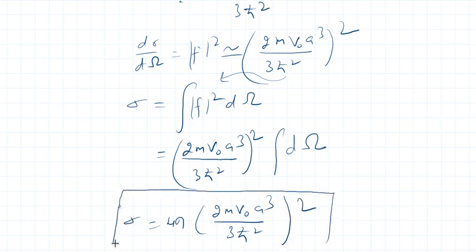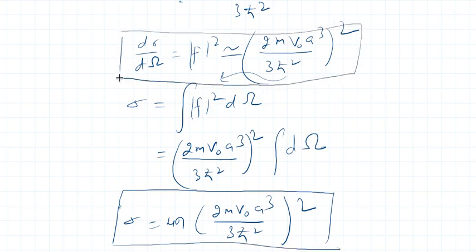for total cross section and this is the expression for differential cross section for the given problem when it's a low energy scattering from some constant potential. So that's all for this lecture. In the next lecture I will discuss another problem where potential is spherical.